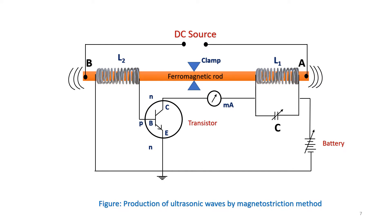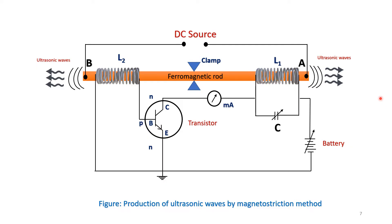These vibrations are tuned with the help of the variable capacitor. By tuning the value of variable capacitance C, we can tune the resonance of the circuit. If the resonance is created — meaning if the natural frequency of the rod matches the applied electrical signal's frequency — there will be generation of ultrasonic waves. This is the basic principle involved in the production of ultrasonic waves by the magnetostriction effect.